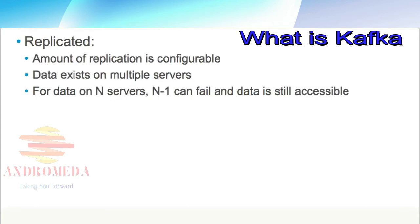Apache Kafka is a replicated service. The amount of replication is configurable, but the data must exist on multiple servers. For data on n servers, n-1 can fail and the data is still accessible. So because of this replication, you could lose a server and still have access to the data.